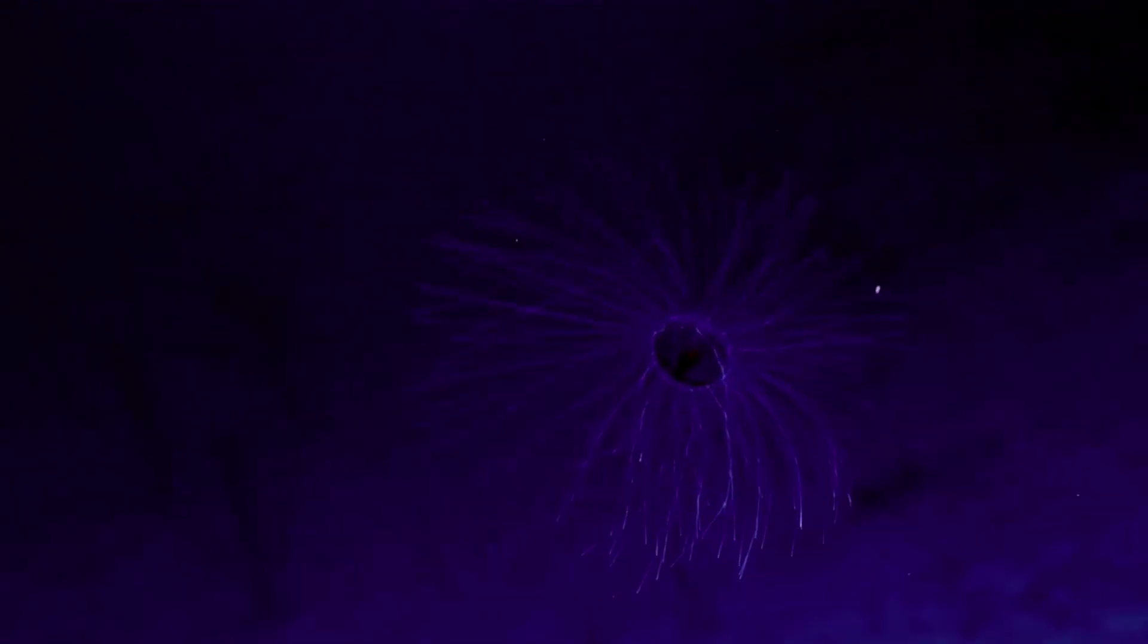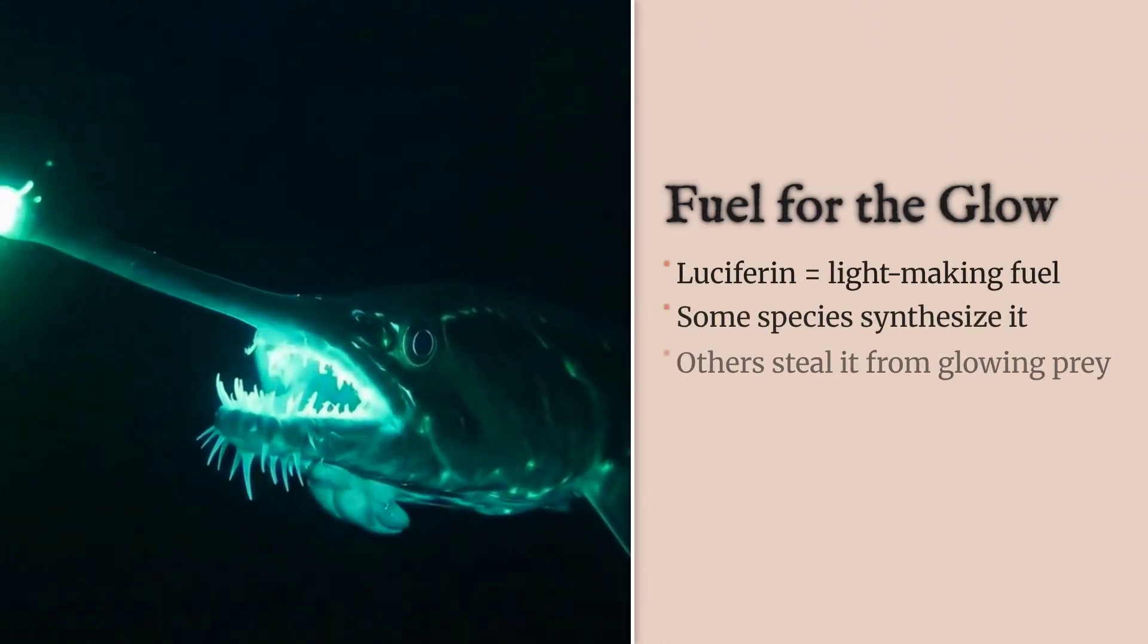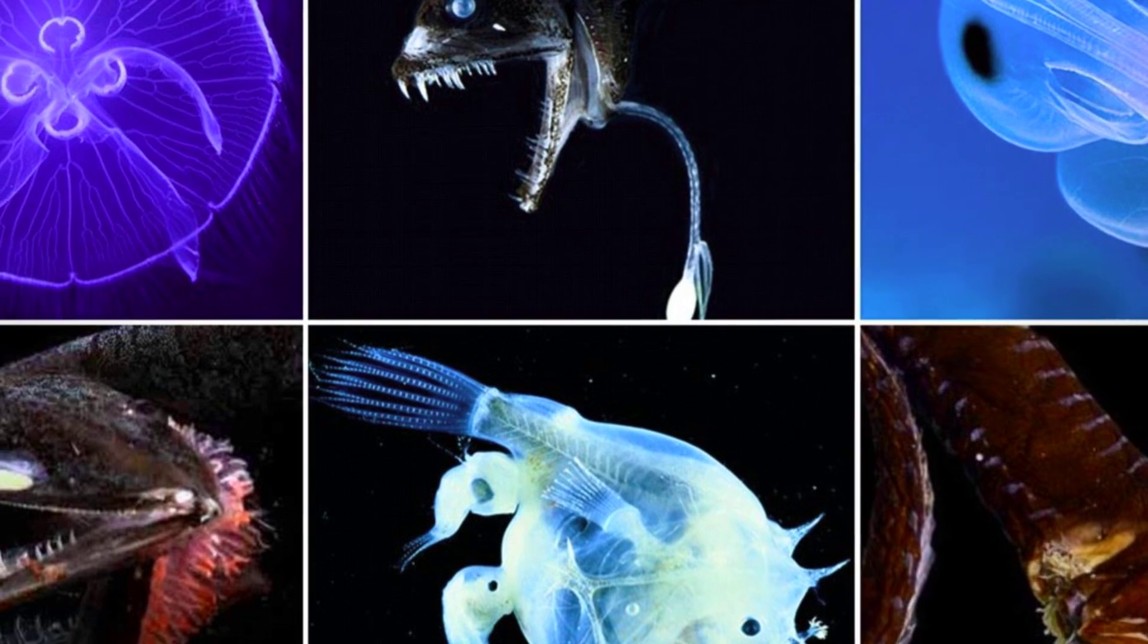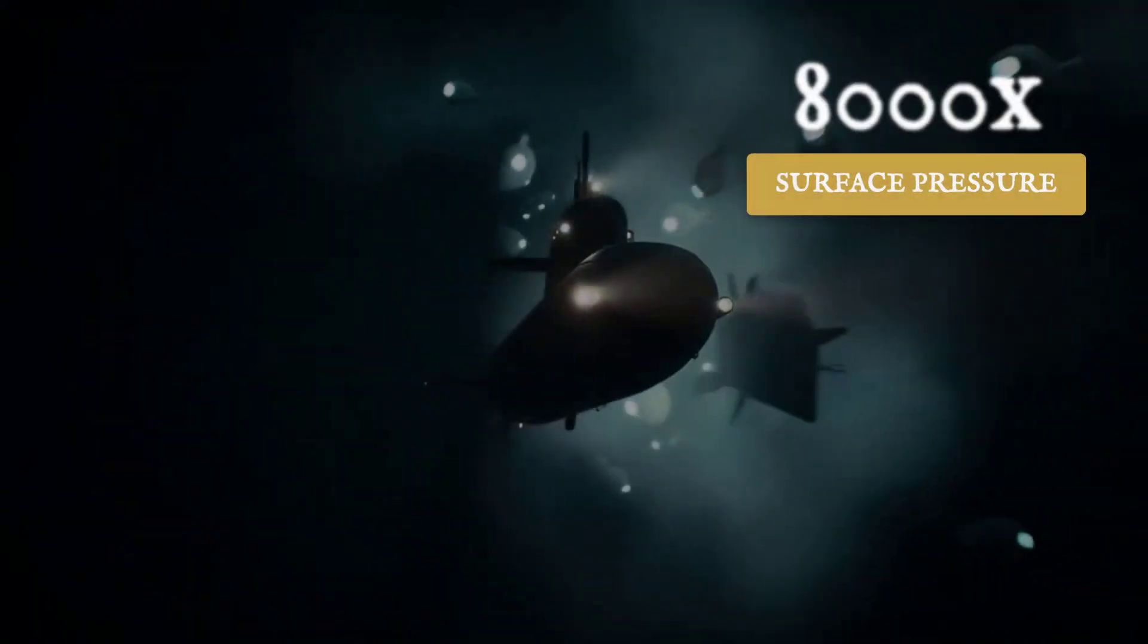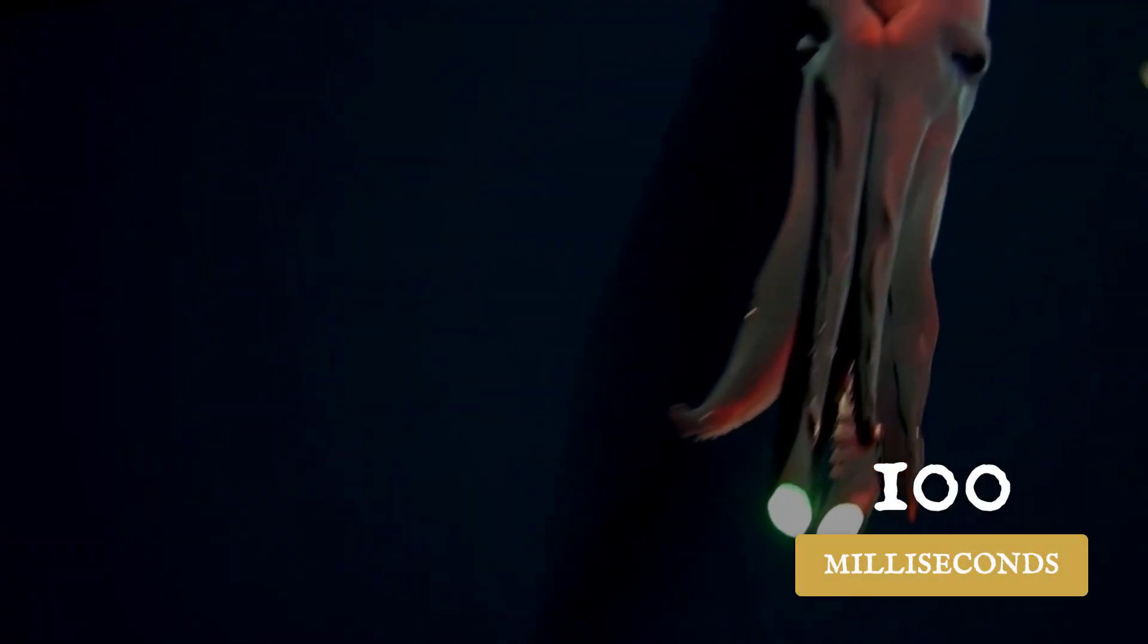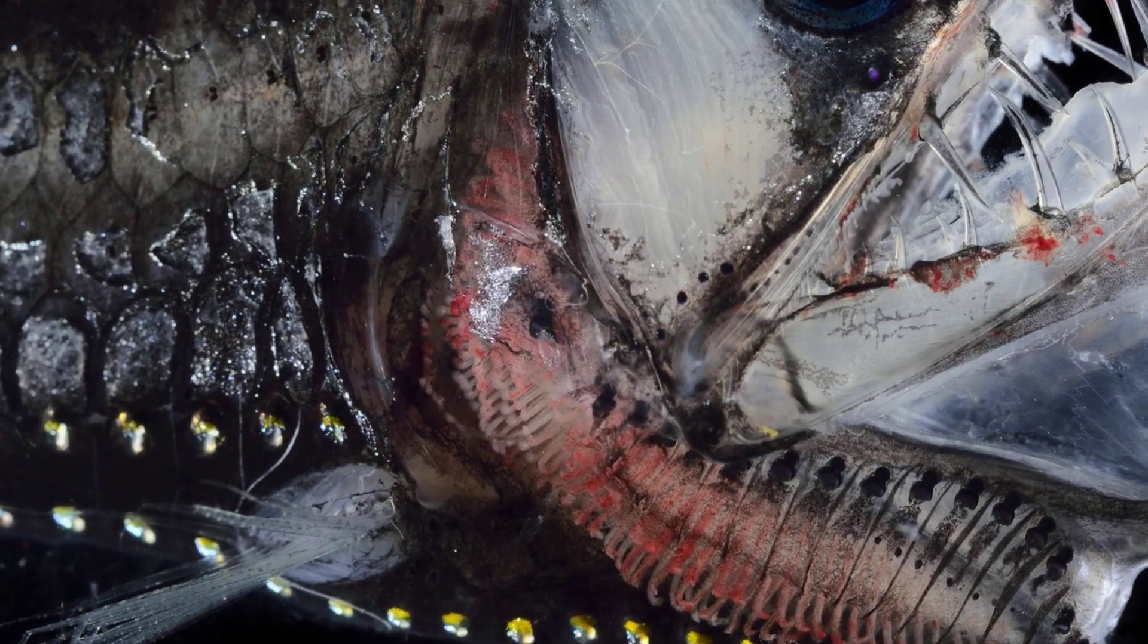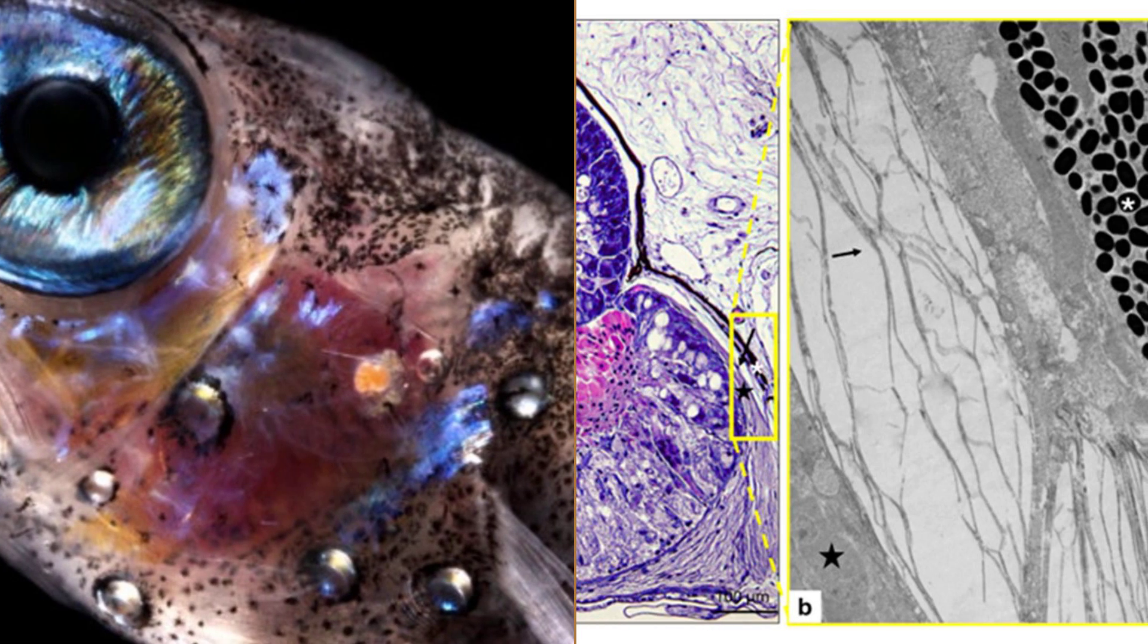Most deep sea creatures rely on a form of luciferin called coelenterazine, which can be synthesized from scratch or scavenged from prey. The enzyme luciferase is tailored by each species, fine-tuned by evolution to function in near-freezing water and under pressures more than 8,000 times greater than those at the surface. In some animals, oxygen flow is tightly controlled, allowing them to turn their glow on or off in a fraction of a second. The light is produced in specialized organs known as photophores, tiny lens-like structures embedded in skin or tissue, each acting as a miniature lamp.